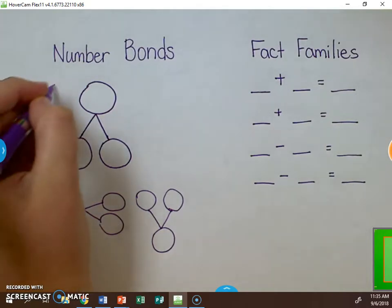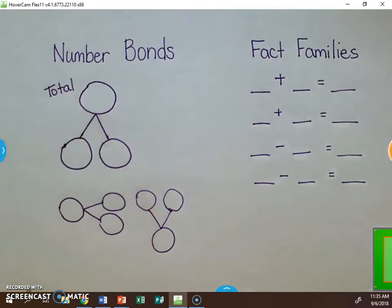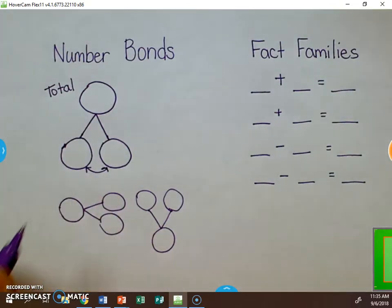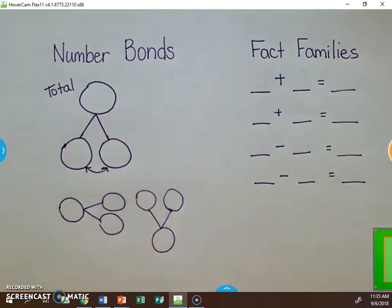This circle up here represents the total, the number that you're starting with. These two circles down here at the bottom show the numbers that you would add together to get the total. So for example,